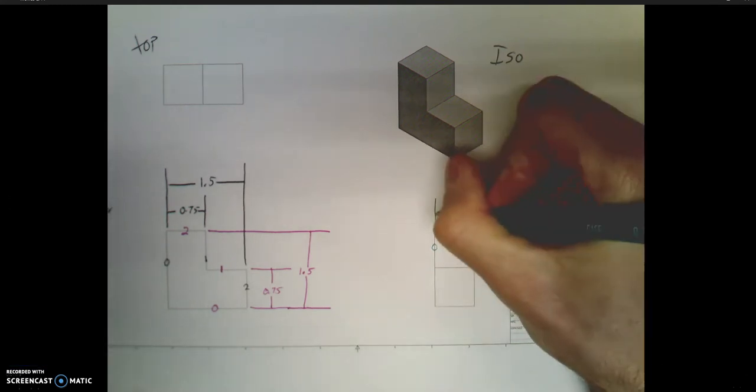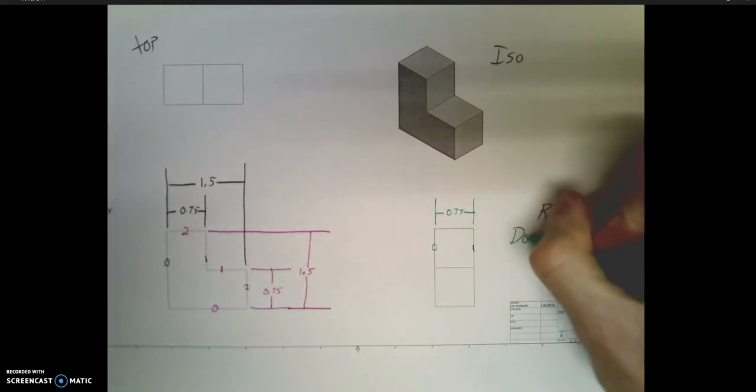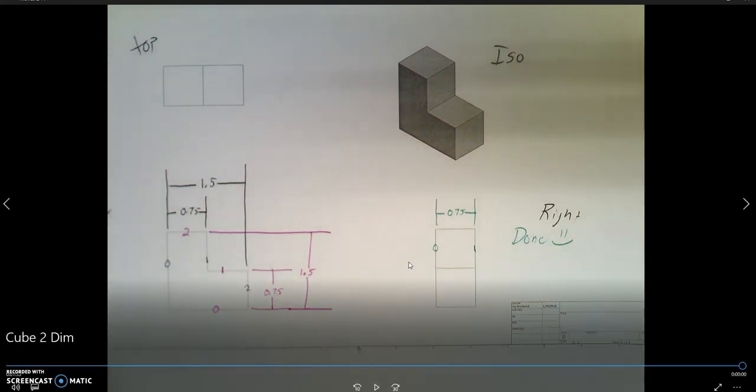Depth looks at the right side, our vertical lines. The first one gets a 0, the next one gets a 1 for our starting and ending point. From front to there, 1 cube length, so we've got that 0.75 depth.